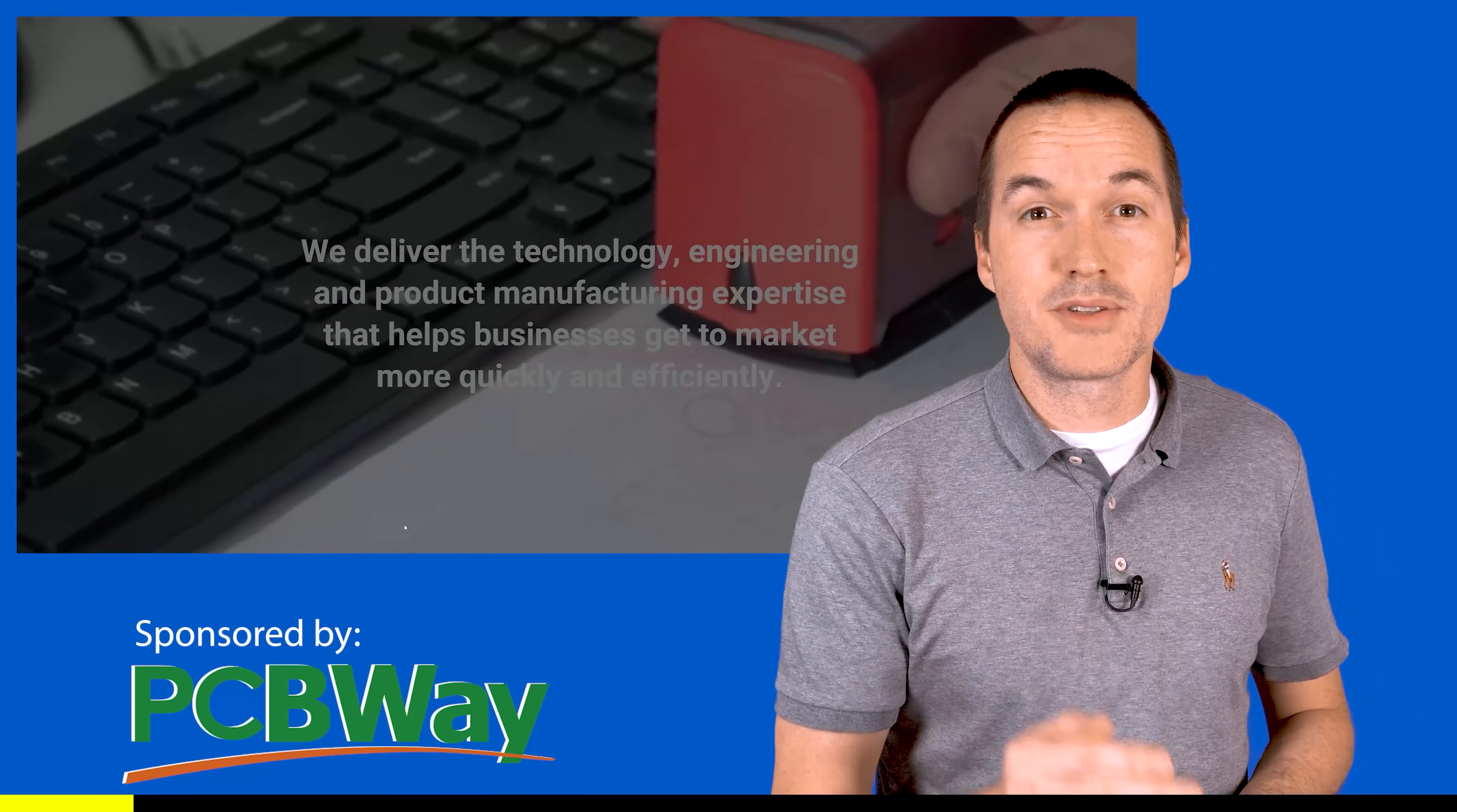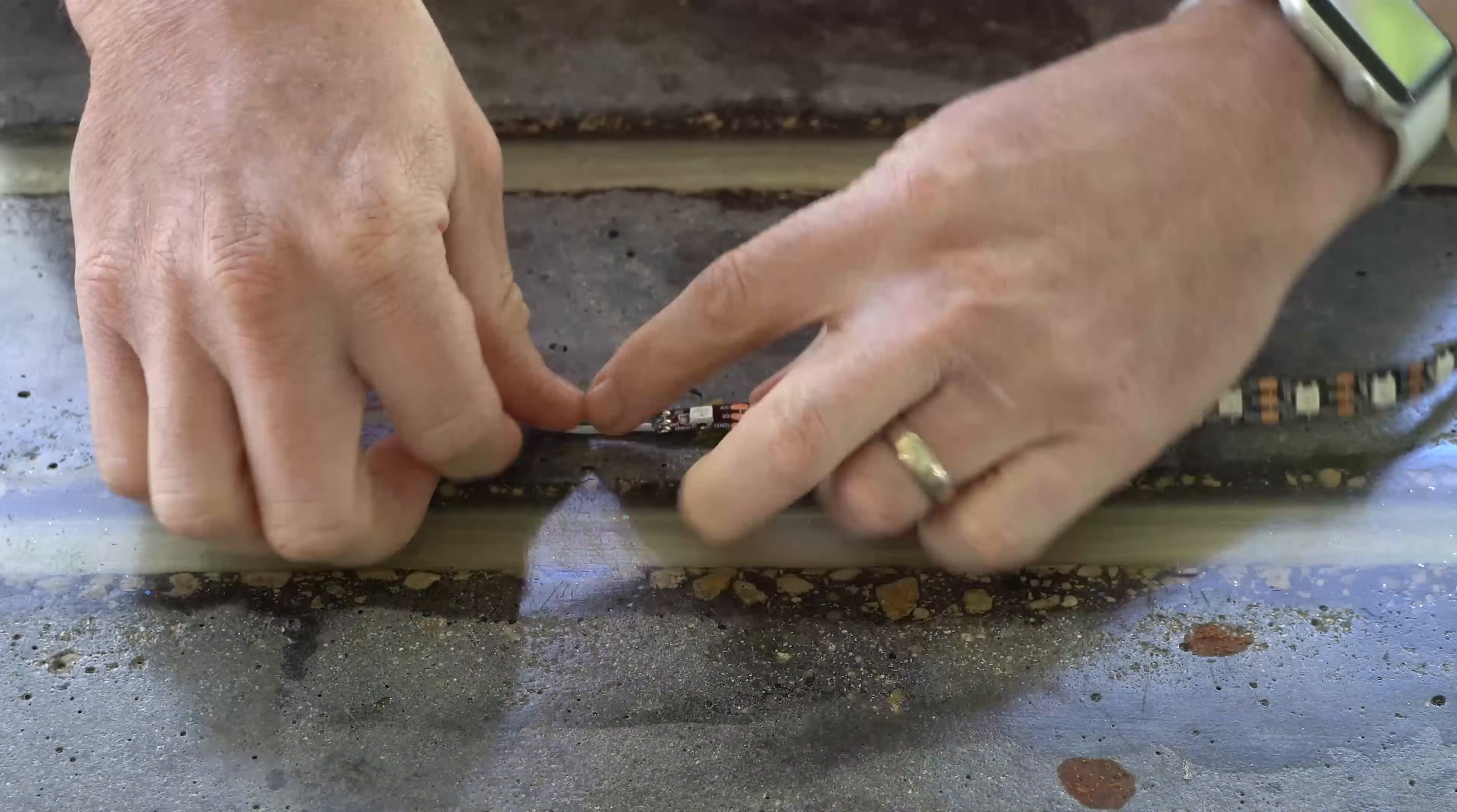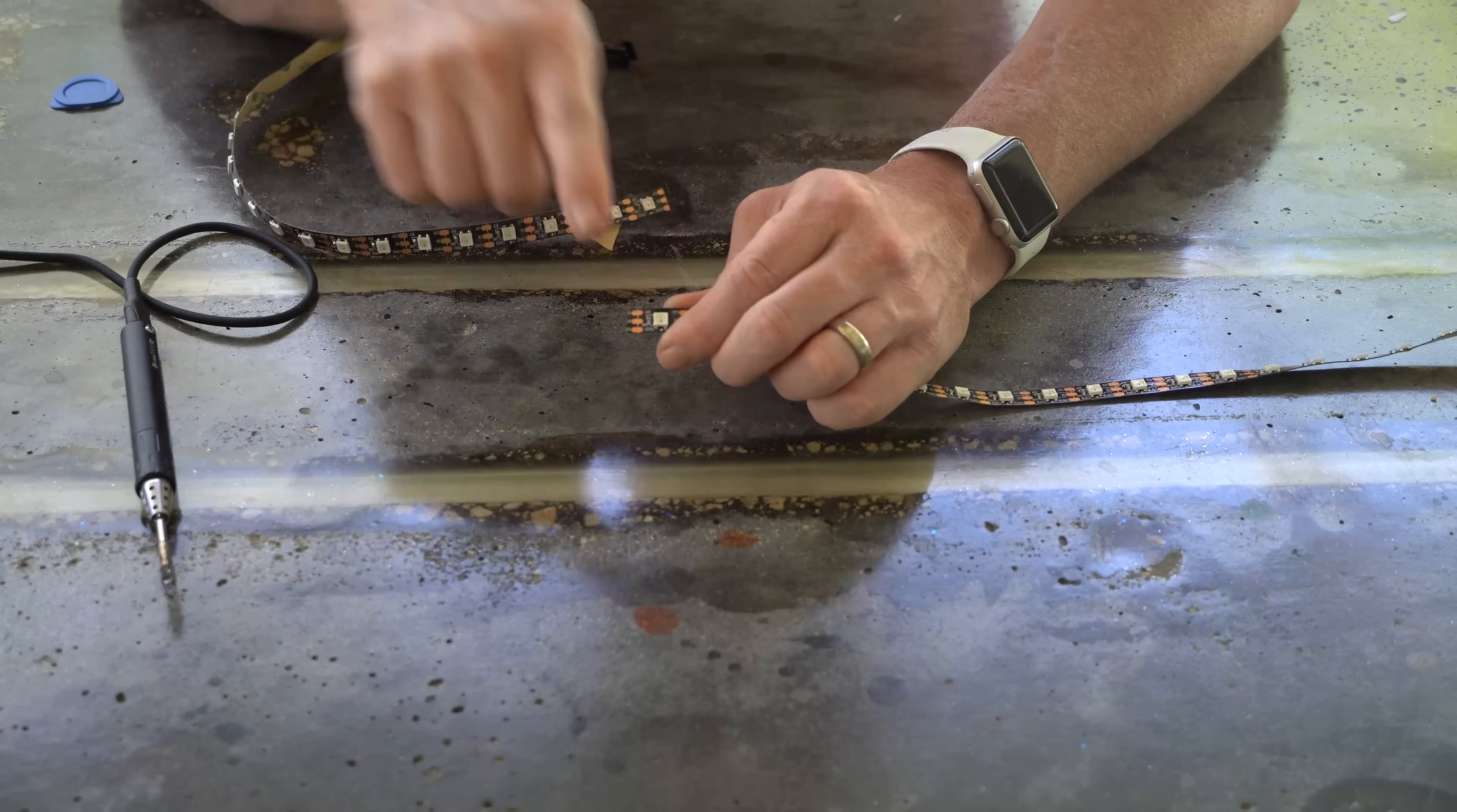The easiest strips to attach together are the IP30 non-weatherproof strips. The bottom of these strips is generally enamel coated, so we're going to make our connections at the top. If you're joining two whole strips, you'll need to first remove the factory wiring by desoldering those wires. And the nice part about doing that is that you'll end up with a full pad to solder to. If you're using a cut strip, you may only have a half pad available which makes it really difficult to make a strong connection. So, it's better to sacrifice one LED and have a full pad for the bottom strip for your connection.